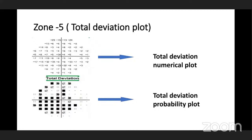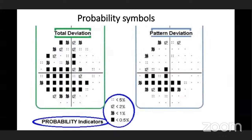In the total deviation numerical plot, we see the depth and magnitude of visual field loss. In the total deviation probability plot, we determine the extent of visual field loss. Probability symbols include p less than 5%, less than 2%, less than 1%, and less than 0.5%. If p is less than 5%, this degree of loss of sensitivity is seen in less than 5% of the normal population, providing a statistical representation.